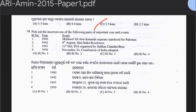Question 74: Identify the incorrect year-event pairing. 1940 — Muhammad Ali Jinnah demands separate statehood for Pakistan; 1942 — 8th August Quit India Resolution; 1943 — 21st October INA organized by Subhash Chandra Bose; 1950 — 26th November Constitution of India adopted. The answer is option D — serial number 4 is incorrect.